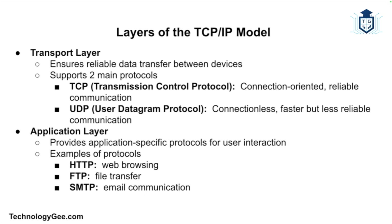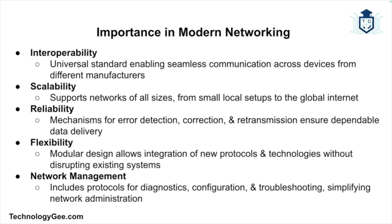The third layer is the transport layer, which ensures reliable data transfer between devices. It includes TCP for connection-oriented communication and UDP for connectionless communication. The fourth is the application layer, which provides protocols for specific network applications such as HTTP for web browsing, FTP for file transfer, and SMTP for email.